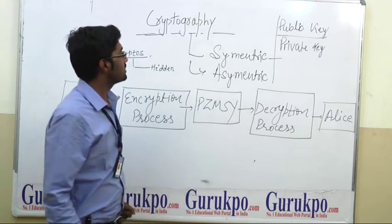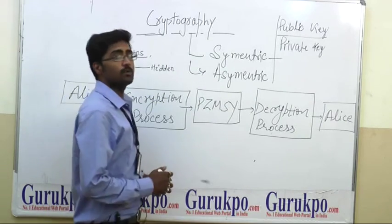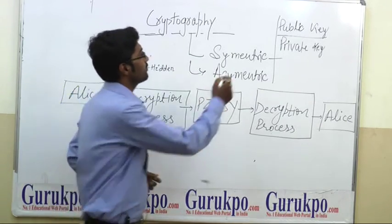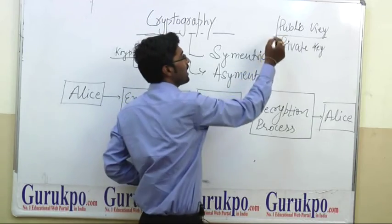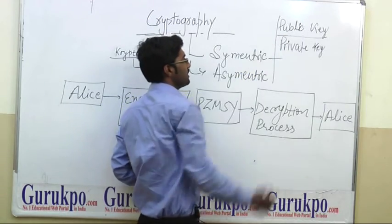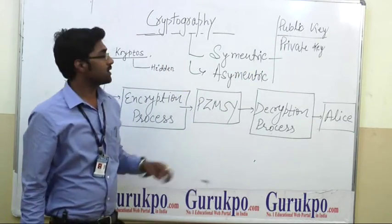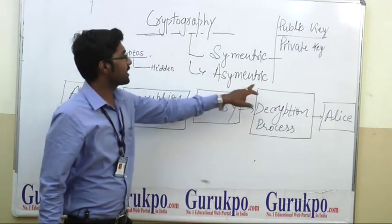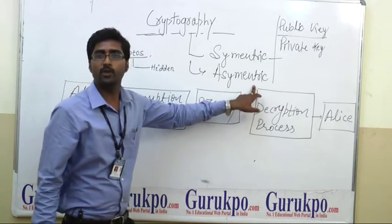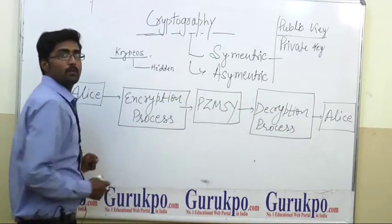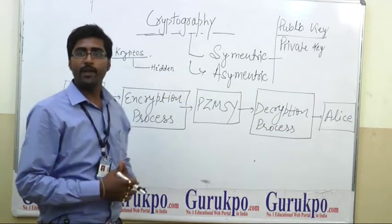And when we use two different keys — a public key and a private key — then it is known as asymmetric key cryptography. This is all about cryptography.